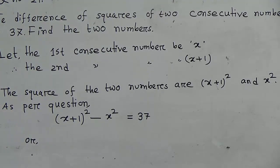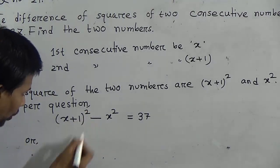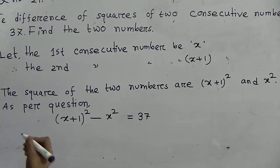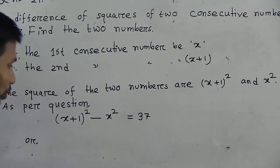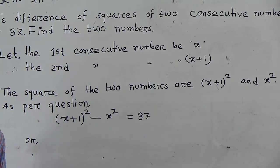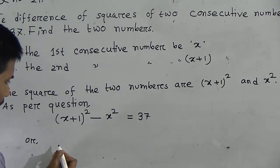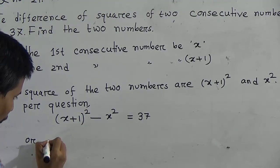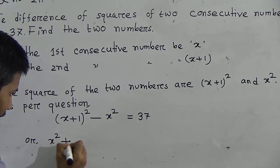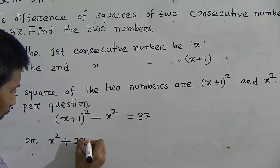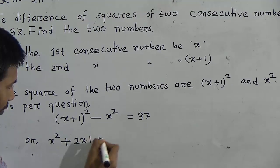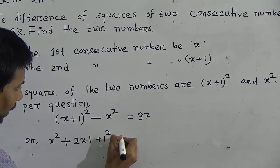Now expand (x+1)². We know the formula: (a+b)² = a² + 2ab + b². Apply this formula here. So (x+1)² can be written as x² + 2·x·1 + 1², which gives x² + 2x + 1.